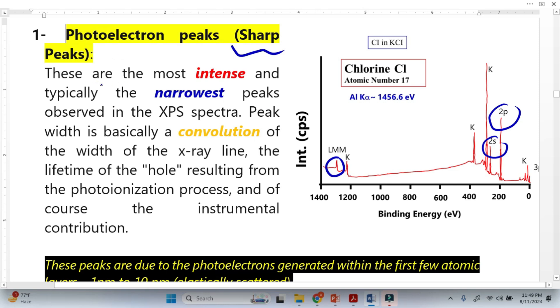Let's read here. These are the most intense, meaning high intensity, and narrowest peaks observed in XPS spectra. We know that basically this peak is basically the convolution. Convolution is the width of the x-ray, one parameter.